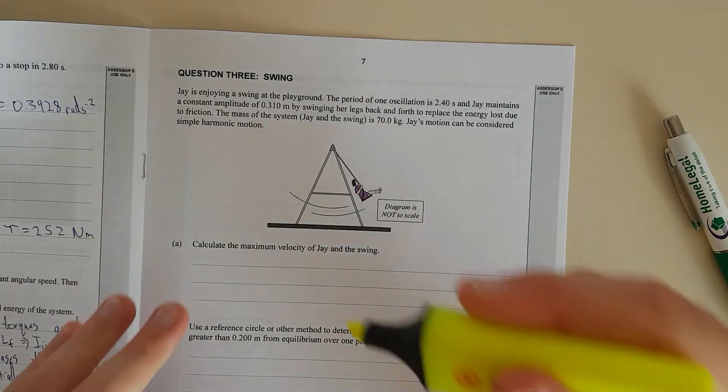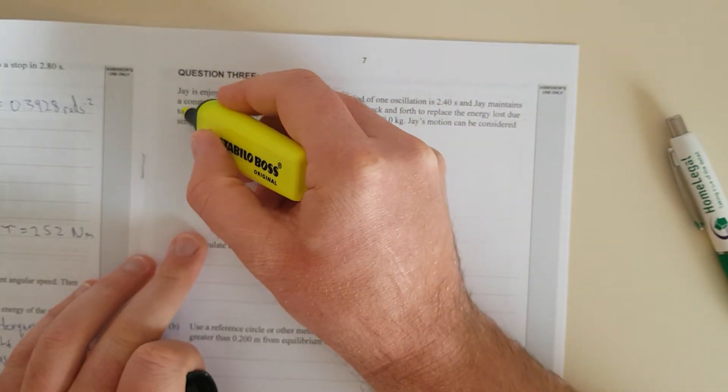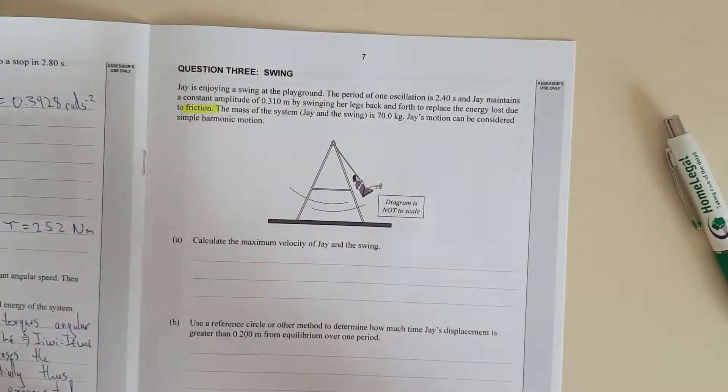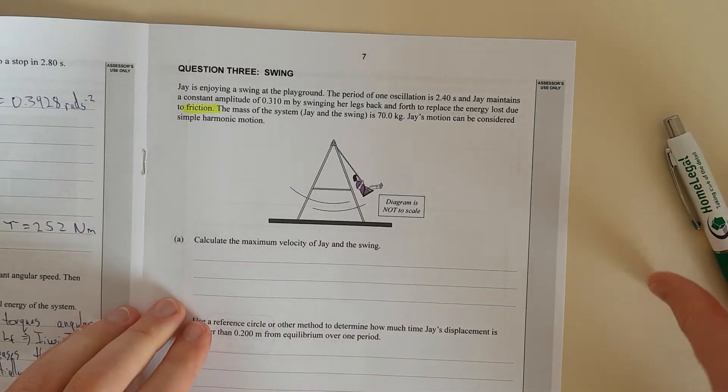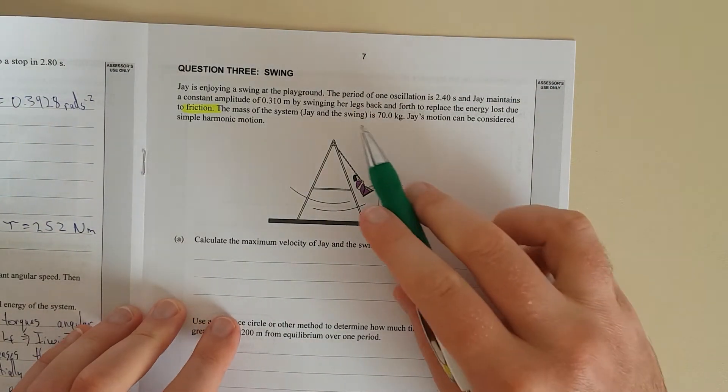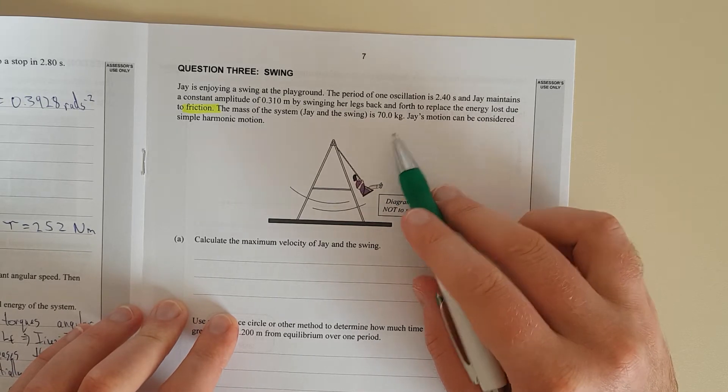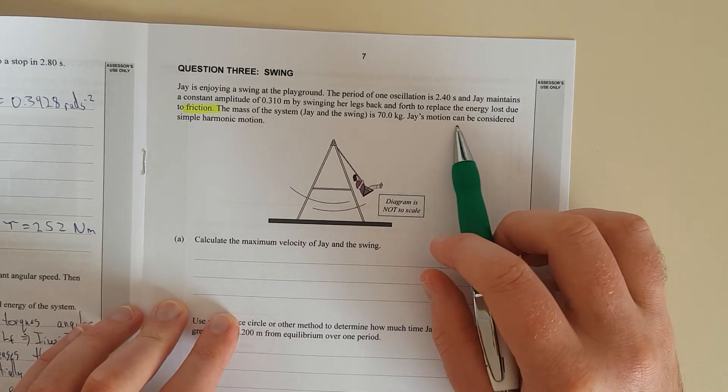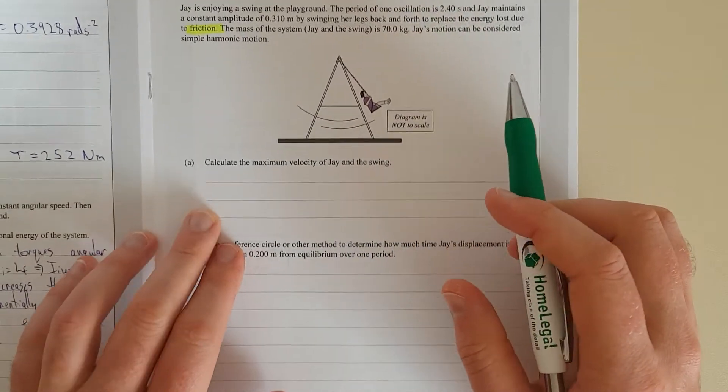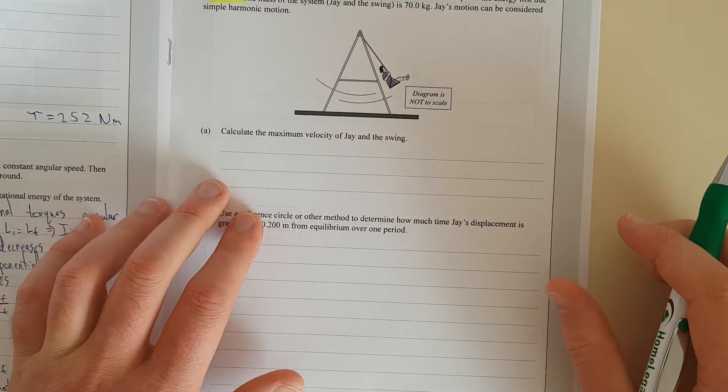Jay maintains a constant amplitude of 0.3 meters by swinging back and forth to replace the energy lost due to friction. So I'm going to get my highlighter and highlight friction. The mass of the system, Jay and the swing, is 70 kilograms. Jay's motion will be considered simple harmonic motion. Calculate the maximum velocity of Jay in the swing.